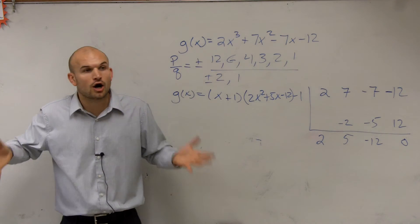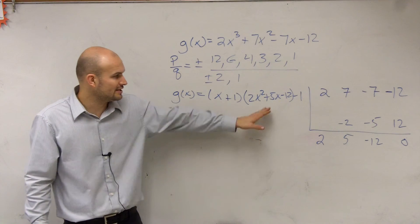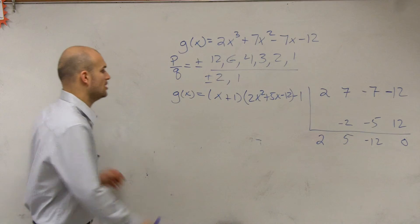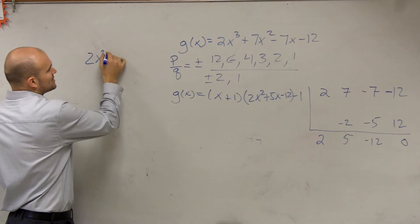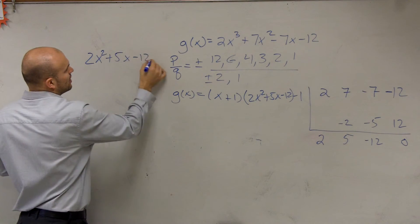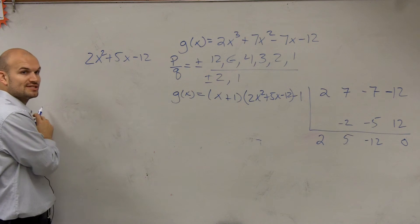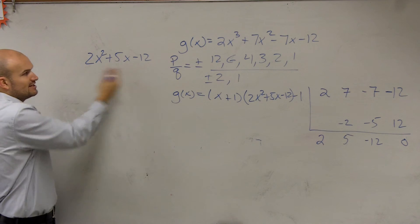But now we need to figure out what are all of the zeros. So we need to determine, is this factorable? So now we need to factor 2x squared plus 5x minus 12. We know that negative 1 is a zero. Now we need to determine what are all the zeros from this. So we need to factor this.